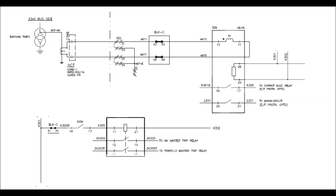How the 50N or system backup earth fault relay operates has been shown in this diagram. The 50N is the system backup earth fault relay, and the neutral CT of ratio 300/1 is shown. The NCT secondary is taken via terminal box X01 terminals 31 and 32, and via a test block to the 50N relay. An auxiliary supply has been taken via K301 and K302.